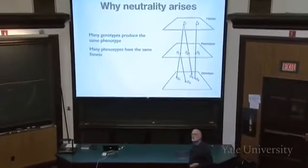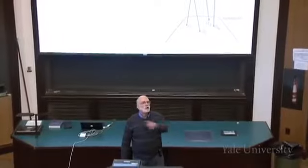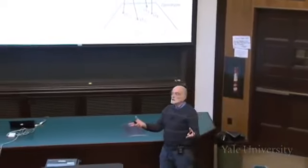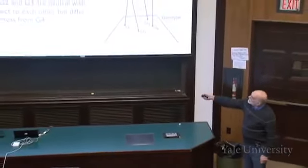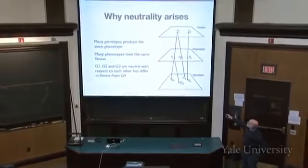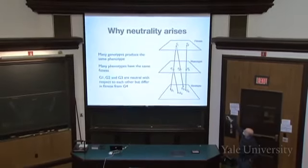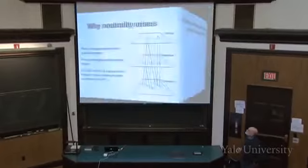How many of you come from one-child families? All of your parents have the same fitness. How many from two-child families? All of your parents have the same fitness. Basically, in any population there will be a lot of organisms that all have two offspring or three offspring — those classes all have the same fitness. When we look at the whole pathway, G1, G2, and G3 are neutral with respect to each other when measured in a certain environment, but they differ from G4. So there is a lot of genetic variation that is neutral, for various reasons.